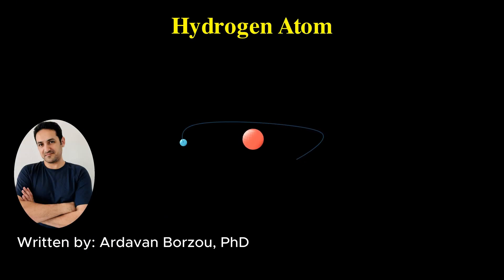Imagine the simplest atom possible, the hydrogen atom. At its heart sits a single proton, and orbiting around it is one tiny electron.